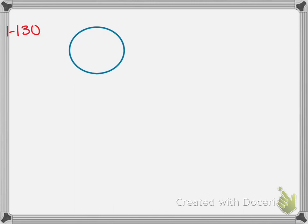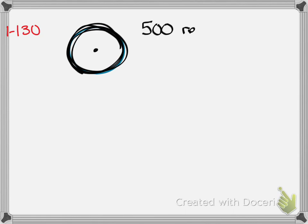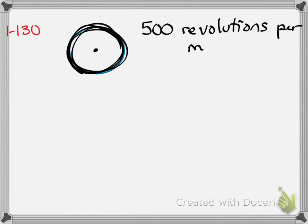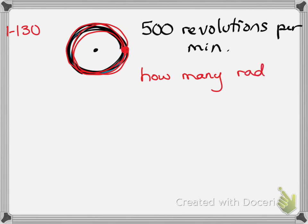Problem 1-130. A wheel is spinning at 500 revolutions per minute. It does that 500 times a minute, so it's really fast. How many radians per second is this? These are measures of angular speed that we just talked about.